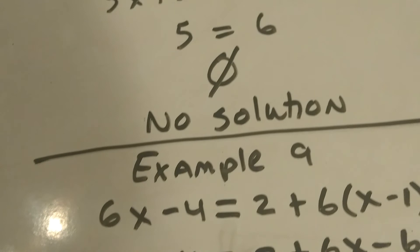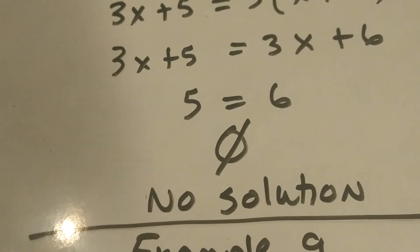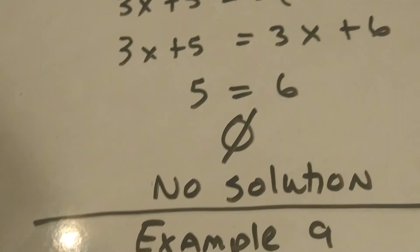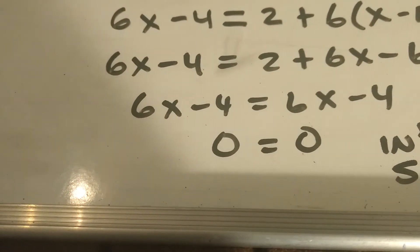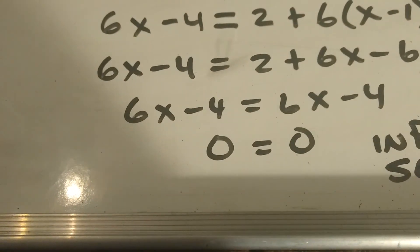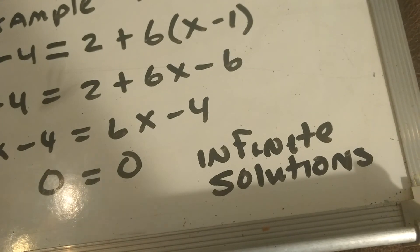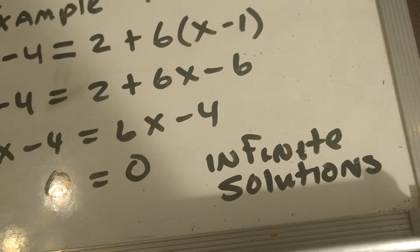So if I solve an algebraic equation and I get different numbers on both sides, it's no solution. But if I solve an algebraic equation and I get the same number on both sides, it's infinite solutions. You've got to know this. You've got to know this.